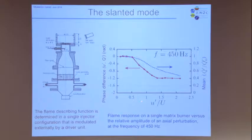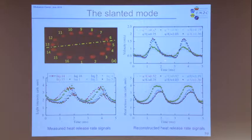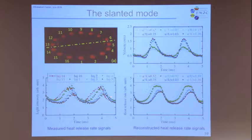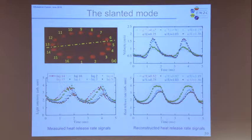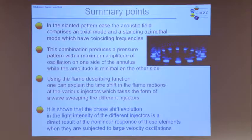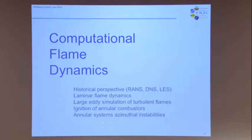At certain places where you have higher velocities, you have a phase shift, and this phase shift will be reflected in your heat release fluctuations. It is possible to use this data — the phase, and the gain from the describing function — taking into account the velocity fluctuations imposed by your mode. Using the transfer function, the describing function, it is possible to build heat release fluctuations which have exactly this shape of a wave. This explains the slanted behavior.